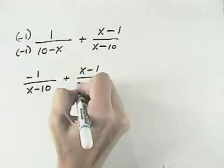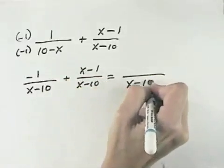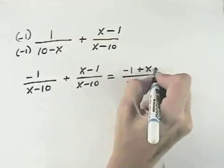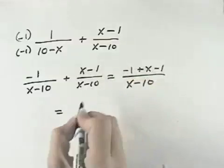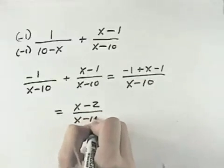And now we can see that we have the common denominator of x minus 10, so we can add our numerators and put them over the common denominator. So we have negative 1 plus x minus 1, and so combining our negative 1s, we have x minus 2 over x minus 10.